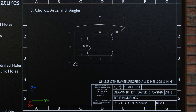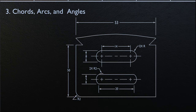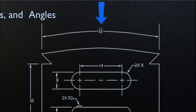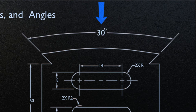Now let's take a look at chords, arcs, and angles. Chords are represented as depicted on the screen. When an arc is to be represented, it is shown with an arc on top of the arc value as seen on the screen. And for the angle, the extension lines are placed at an angle.